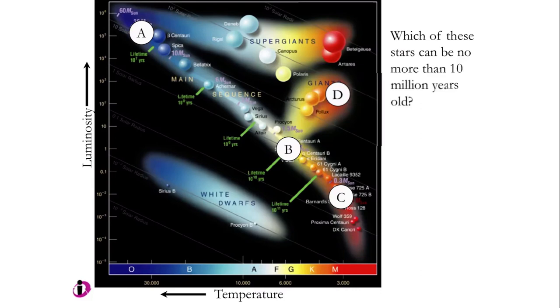Here's basically the same question I just asked. Which of these stars can be no more than 10 million years old? We've already sort of answered it. It's this one, right? This one can be no more than 10 million years old. This one might be 10 million years old, but it certainly can be older. This one might be 10 million years old, but it's probably as much older than that.